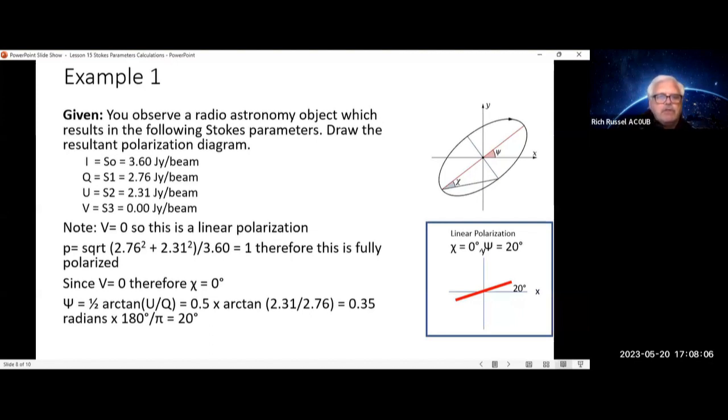U equals 2.31 Jansky per beam, and V equals 0 Jansky per beam. The first thing we'll note is that V equals 0. So this is a linear polarization.